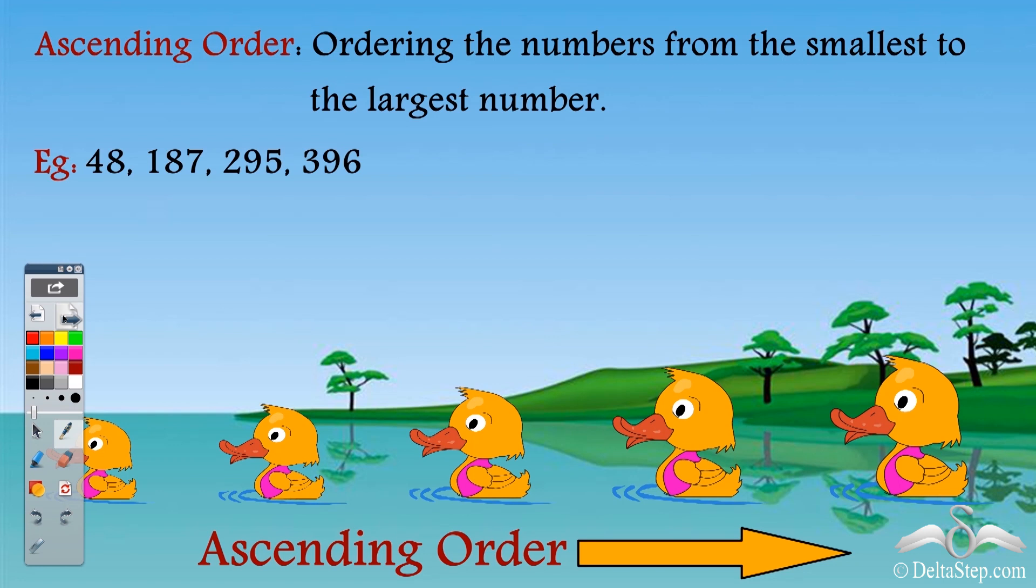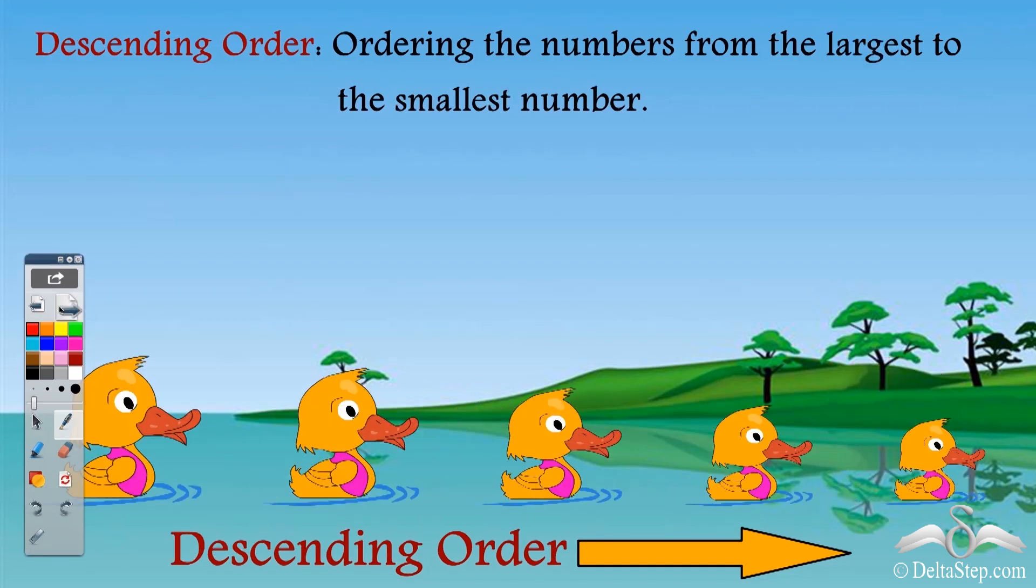For example, these numbers: I see 48 is smaller than 187 which is smaller than 295 which is smaller than 396.